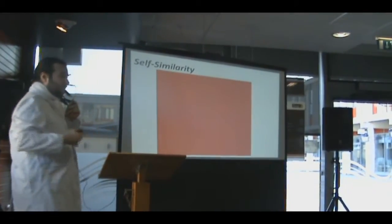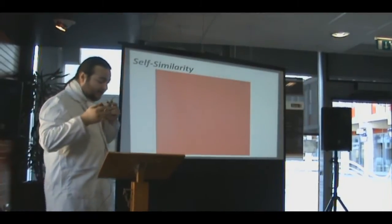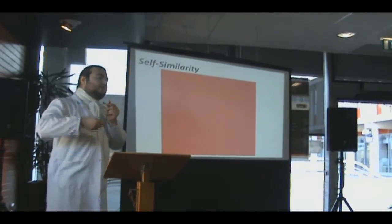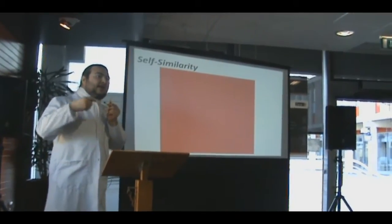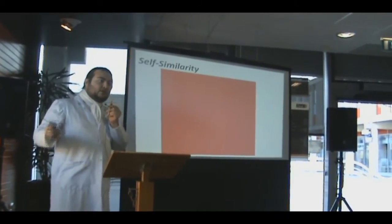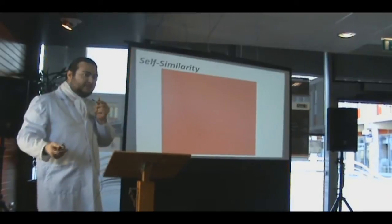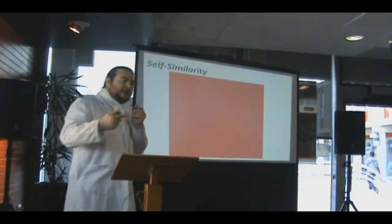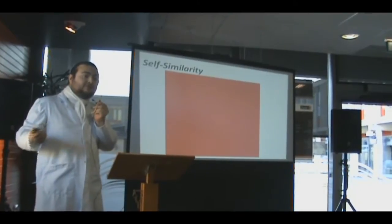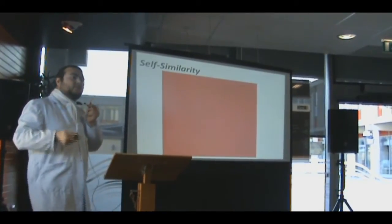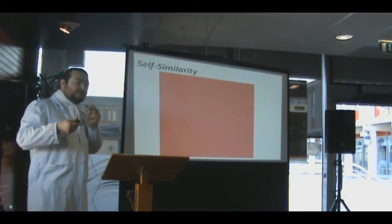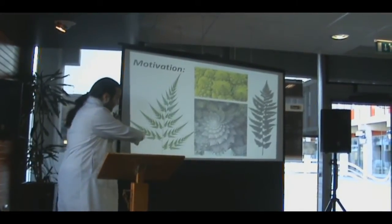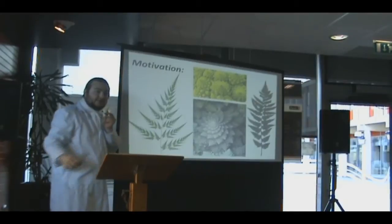What fractals are is a kind of shape that has two properties. The first is that they have complexity throughout. Normally, if you have a normal shape and you zoom in, it becomes simple very quickly — a straight line graph will stay a straight line as you zoom in. But with things such as ferns, if you zoom into a fern, you still get the shape of a fern.